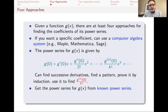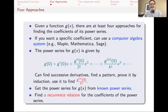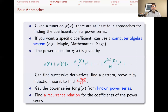Another way is to get the power series for g(x) from known power series — start with something you already know and see what you can get. We will see an example of that today. Another approach is not to find a formula for the nth coefficient, but to find a recurrence relation for the coefficients. Recurrence relations are very useful in combinatorics, and we will see an example of that as well.